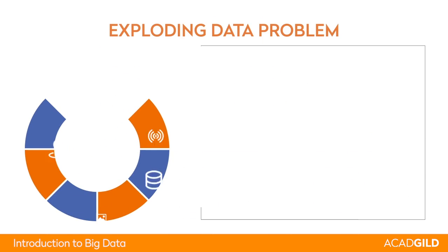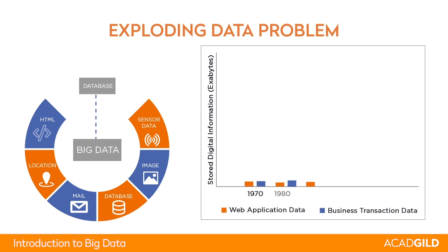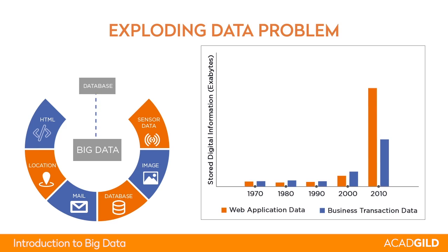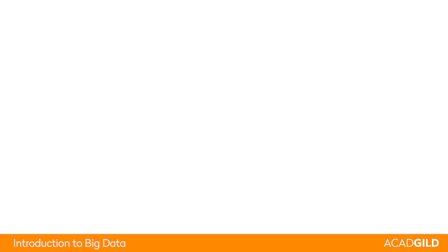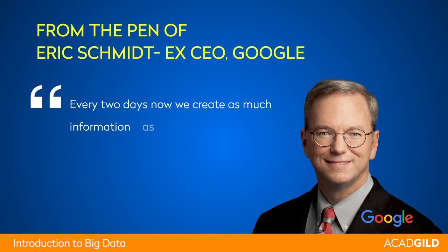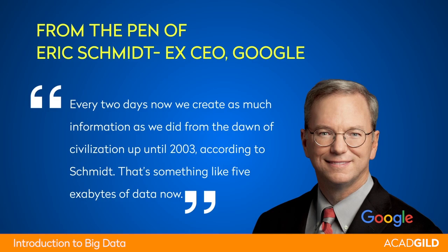If we look at the volume of data which has increased in the last few years, web application data has grown exponentially at a much faster rate than transactional data. Application data refers to user behavior on web applications. According to the former CEO of Google, from the beginning of civilization until 2003, the amount of data that was generated back then — we now generate that same scale of data every two days. That is the massive scale of data we are producing today.